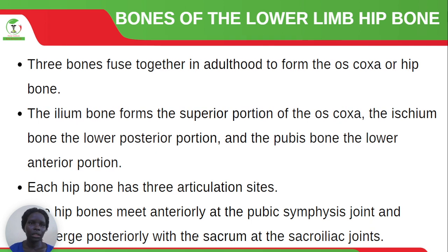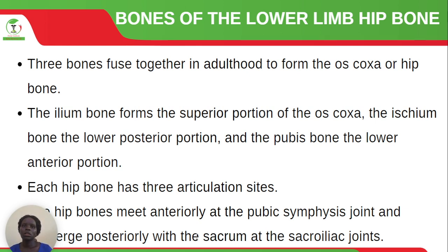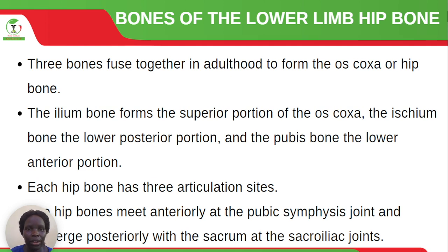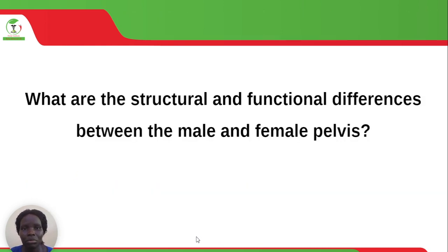There are three bones that fuse together in adulthood to form the os coxae or hip bone. The ilium bone forms the superior portion, the ischium bone forms the lower posterior portion, and the pubis bone forms the lower anterior portion. Each hip bone has three articulation sites. The hip bones meet anteriorly at the pubic symphysis joint and converge posteriorly with the sacrum at the sacroiliac joints. Laterally, deep sockets called the acetabula accept the heads of the femur.